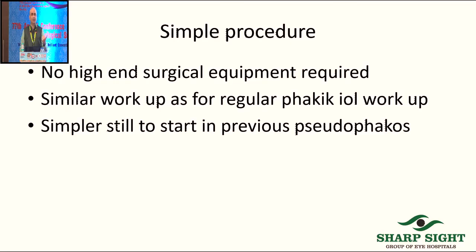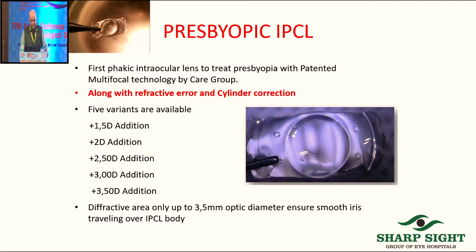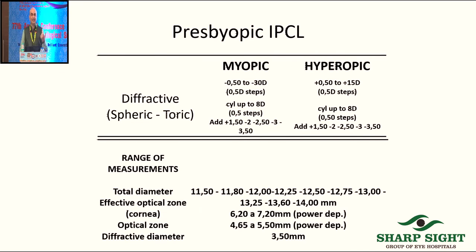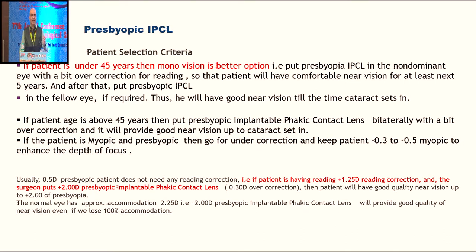A patient who is minus 6 with minus 2 cylinder — you can correct the cylinder, spherical error, and presbyopia together. Selection criteria recommended by the company, with some personal tweaking. I usually do a unilateral implant first and let the patient settle for 2–3 weeks. I give an add of 0.3 D more than what the patient requires — for a 1.5 add patient, I use a 2 D lens — giving extra depth and allowing the remaining accommodation to go to reserve, extending the period of effect. If happy with one eye, no complaints, good vault, I proceed bilaterally. If the patient is happy with one eye, we just leave it.